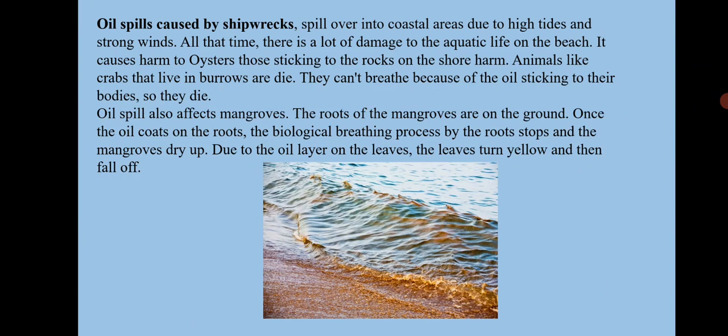Due to the oil layer on the leaves, they turn yellow and fall off. Birds are also heavily affected. Birds' wings have a thin natural oil layer so that water does not stick to them. But when birds come in contact with the spilled oil, the oil quickly penetrates and gets absorbed into the wings, affecting their function and making it impossible for the birds to fly. They become heavy and drown into the sea.